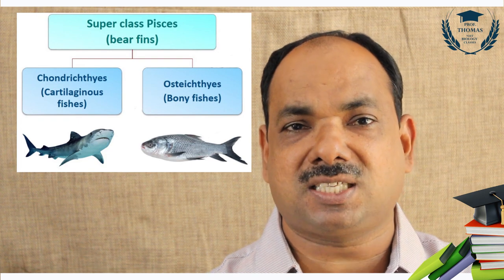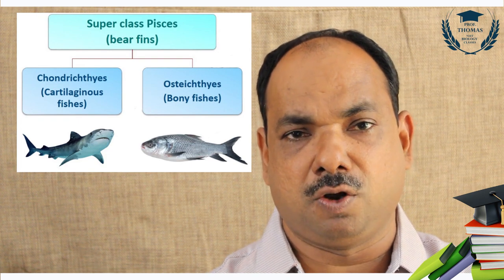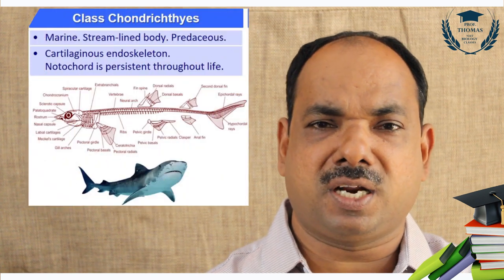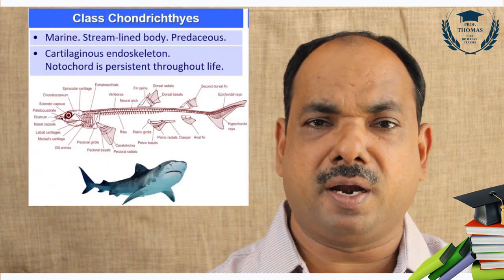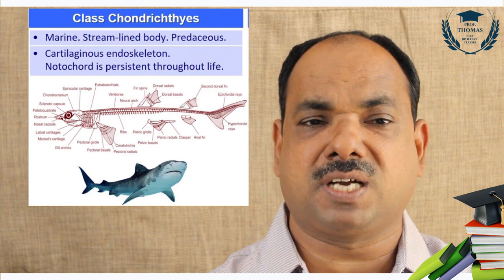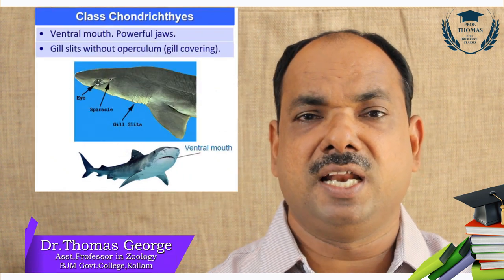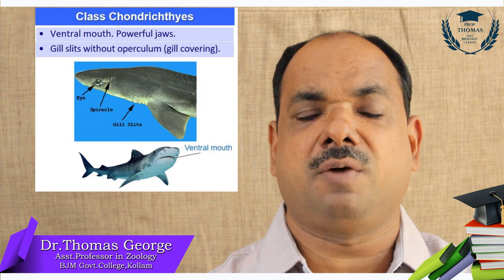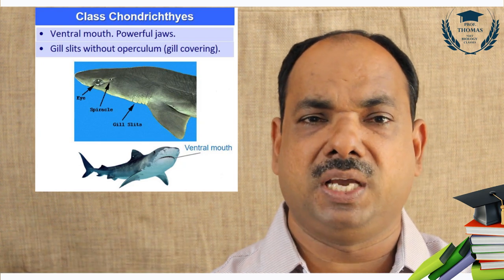Fishes are broadly classified into two categories: Chondrichthyes and Osteichthyes. Chondrichthyes means cartilaginous fishes. Ichthyology is the study of fishes. Chondrichthyes are exclusively marine. Their body endoskeleton is made up of cartilage. The mouth is located ventrally.